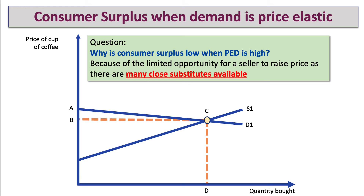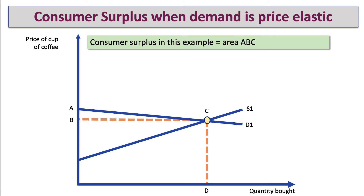The point is, if you have a highly price-sensitive demand, the seller has limited pricing power, and essentially the price in the market is pretty close to the price that most consumers are willing and able to pay. The price is currently at B. The maximum price that people will be willing to pay is price A, where the demand curve cuts the y-axis. So consumer surplus is the area A, B, C — the area underneath the demand curve and above the price — but as you can see, there's limited consumer surplus because the market price is very similar to what consumers are willing and able to pay. So when price elasticity of demand is high, you tend to get fairly low consumer surplus.